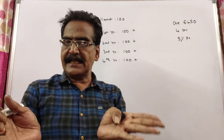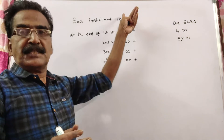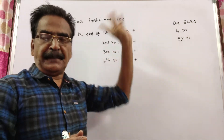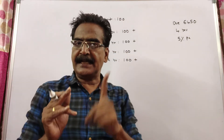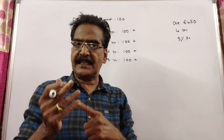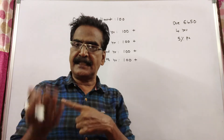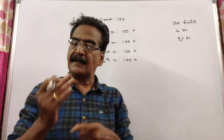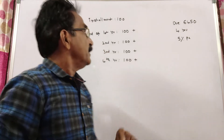Say each installment value is Rs. 100. That is, we pay Rs. 100 at the end of the first year, Rs. 100 at the end of the second year, Rs. 100 at the end of the third year, and Rs. 100 at the end of the fourth year.